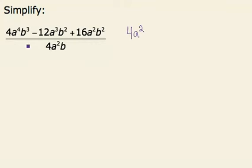And finally, I could pull out a b squared, but since I only want to cancel one b, I will pull out that one b.